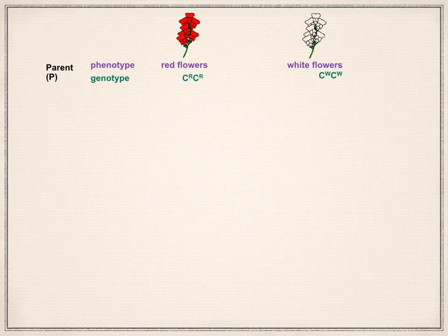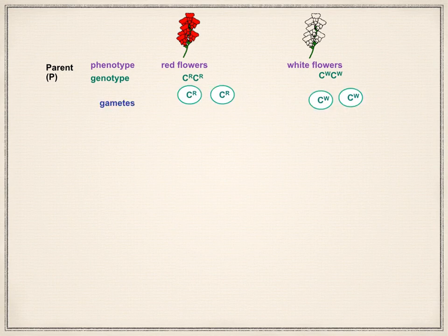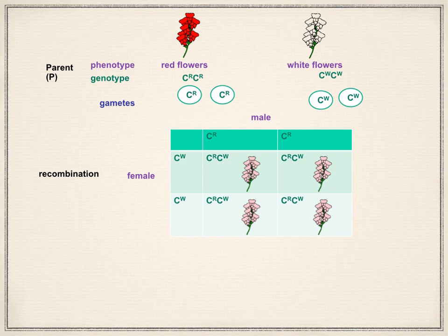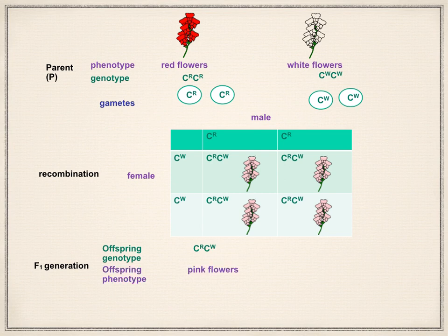Let's do a genetics cross between a red Snapdragon plant and a white Snapdragon plant. Write down the parents' phenotype and genotype: phenotype is red flowers and white flowers; genotype is C superscript R, C superscript R crossed with C superscript W, C superscript W. Write down the gametes and use the Punnett square. All resulting offspring in the F1 generation will have genotype C^R C^W, giving pink flowers. The ratio is that all the flowers will be pink.